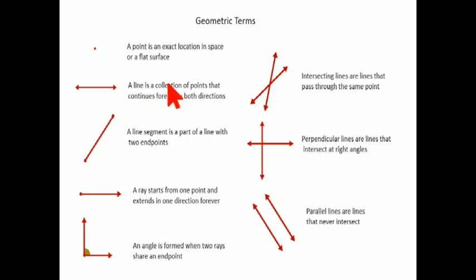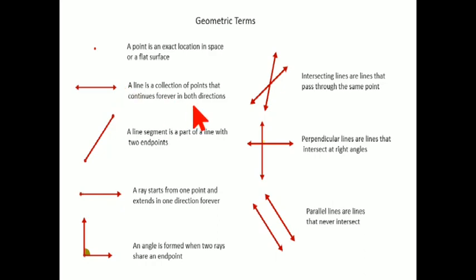Number two: a line. You have heard this term since you were kids. A line is a collection of points — many points collected together that continues forever in both directions, where it doesn't have any endpoint. It goes on and on — that is your line.